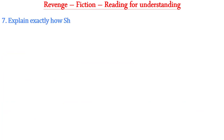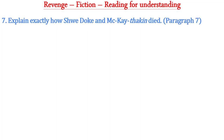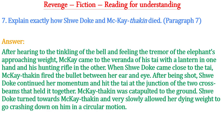Question seven: Explain exactly how Shuidok and Mackay Thakin died. This question is from paragraph seven. After hearing the tinkling of the bell and feeling the tremor of the elephant's approaching weight, Mackay came to the veranda with a lantern and his hunting rifle. When Shuidok came close, Mackay Thakin fired the bullet between her ear and eye. After being shot, Shuidok continued her momentum, hit the thai, and catapulted Mackay Thakin to the ground. Shuidok then allowed her dying weight to go crashing down on him in a circular motion.